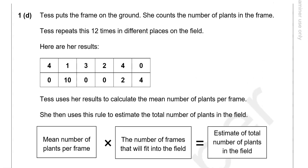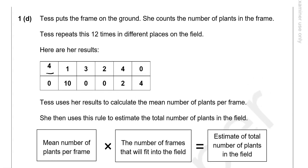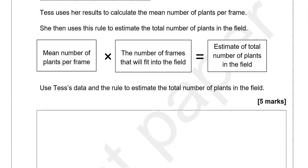So let's work out the mean first. We've got 4 and 1 which makes 5, 8, 10, 14, 24, 26, 30. So it's 30 divided by 12.